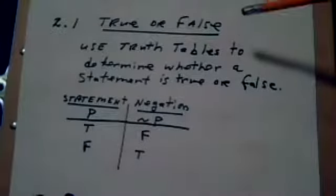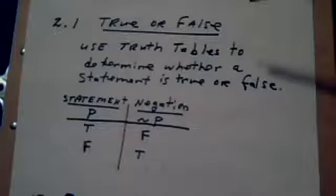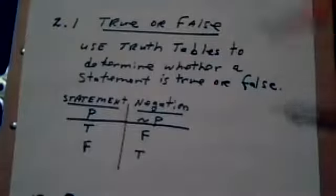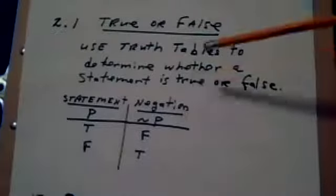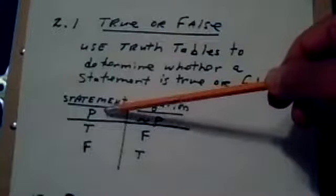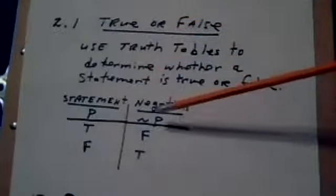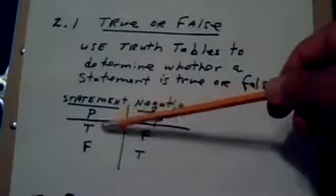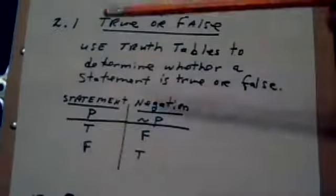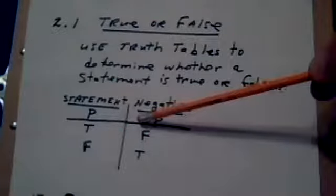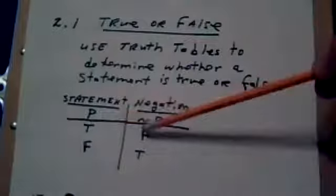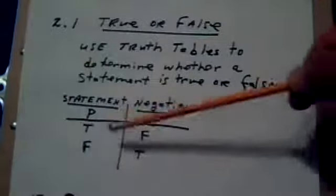Now we're going into truth tables. Truth tables collect the result of a statement—its truth value. These are truth values. Suppose my statement was p, and this table was to show what the negation of p is. P can be true or false. The negation of p would be false for true, and true for false.